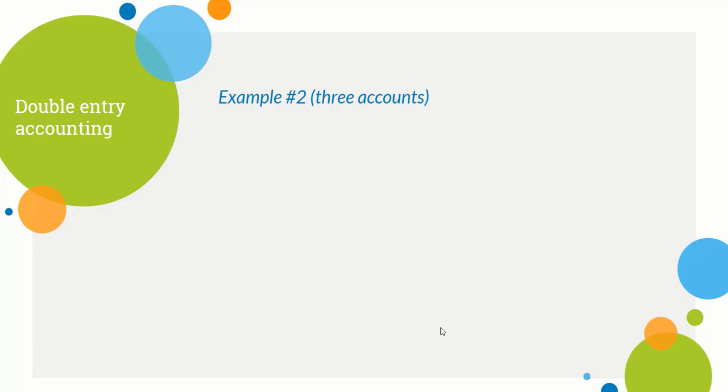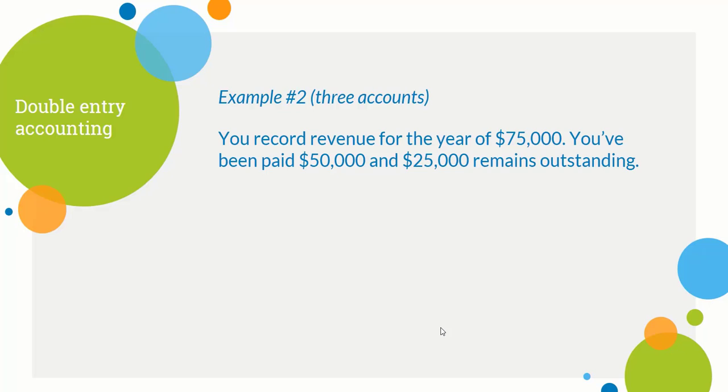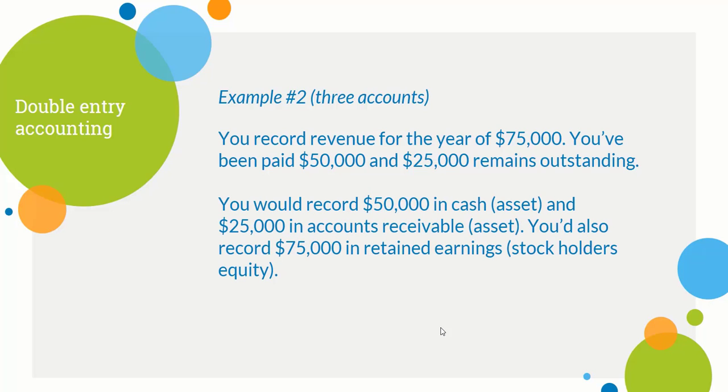Now let's look at an example where three accounts are affected. Say you had $75,000 in revenue last year — maybe you're a Myspace consultant. You sell $75,000 worth of services and you've been paid $50,000, with $25,000 still outstanding. You would record $50,000 in cash because that's what you received, and $25,000 in accounts receivable for what's still owed to you. Both are assets, so assets just increased by $75,000.